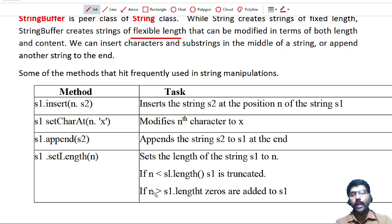If the n value, whatever parameter we passed here, if the n value is greater than the string length, in that case additional zeros are added at the end.